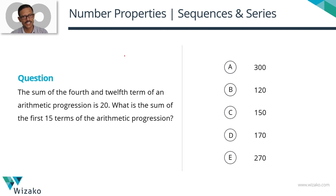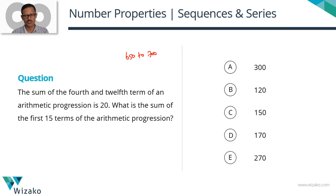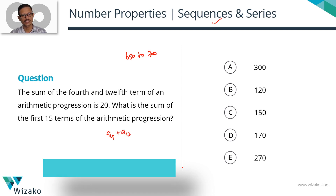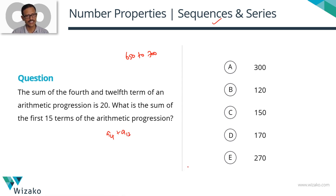This is an easy to moderate difficulty question. I'll classify this as a 650 to 700 GMAT problem-solving question from arithmetic progression. The sum of the fourth and twelfth term of an arithmetic progression is 20. We're given the sum of the fourth term A4 and the twelfth term A12. What we need to find out is the sum of the first 15 terms.